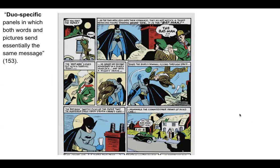Here is one page from the first Batman comic. Looking at the first panel on the second line, it says 'The Batman lashes out with a terrific strike,' and we have an image of him doing exactly that. Then the caption says 'He grabs his second adversary in a deadly headlock' — that's what we see in the image. The images and the words are saying the exact same thing. You could do away with the words and do pretty well, and the same with the images — they don't really add anything, they're just backing each other up.